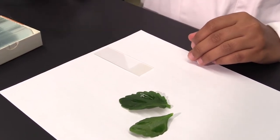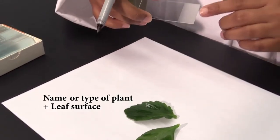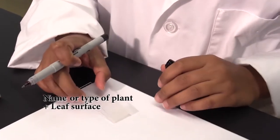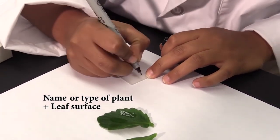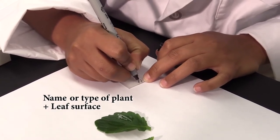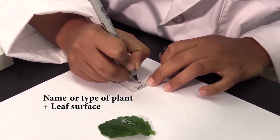It is important that you label the frosted part of the slides. When labeling the frosted part of the slides, put the name or type of plant and the leaf surface: ab-axial and ad-axial.